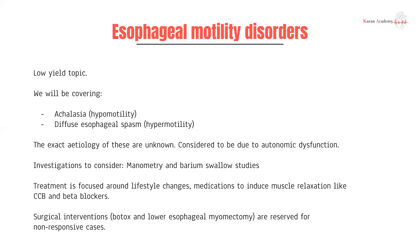Diffuse esophageal spasm, as the name suggests, is where the esophagus — a muscular tube — intermittently contracts abnormally. The exact cause is unknown but is considered to be autonomic dysfunction. Investigations include manometry, where a probe measures exact pressures at the lower esophageal sphincter, and barium swallow studies. Treatment is focused on lifestyle changes, and medications to induce muscle relaxation such as calcium channel blockers and beta blockers. If that doesn't work, surgical interventions such as Botox injection to reduce nervous input and cause relaxation, or a lower esophageal myomectomy to cut through the sphincter and open it up, can be performed.